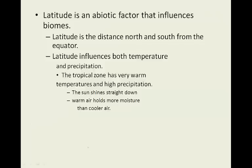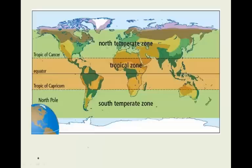Latitude is an important abiotic factor that influences biomes. Latitude is the distance north or south from the equator, and it influences both temperature and precipitation. The tropical zone, for example, has very warm temperatures and high precipitation, because the sun shines straight down and the warm air holds moisture better than cooler air. We can see the northern temperate zone, the southern temperate zone, and also the tropical zone.